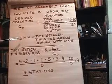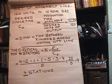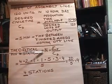In order to reach your 120 units total for that day. The next thing we can calculate is the theoretical minimum number of stations, which is N.